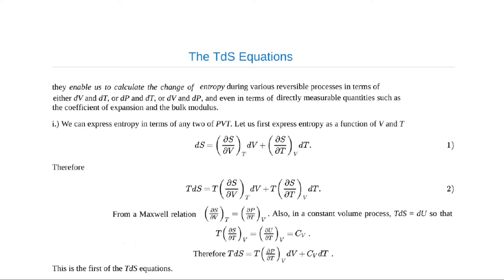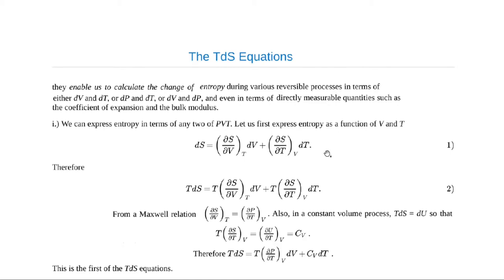Now we will derive the first TDS equation. For that, we will express entropy in terms of any two variables from pressure, volume, and temperature. Entropy is a function of V and T, that is S is equal to S of V comma T. If we differentiate that, we get DS is equal to partial S by partial V at constant temperature T, into dV, plus partial S by partial T at constant volume, into dT.